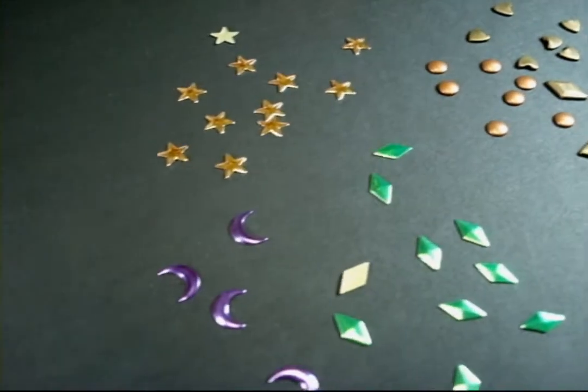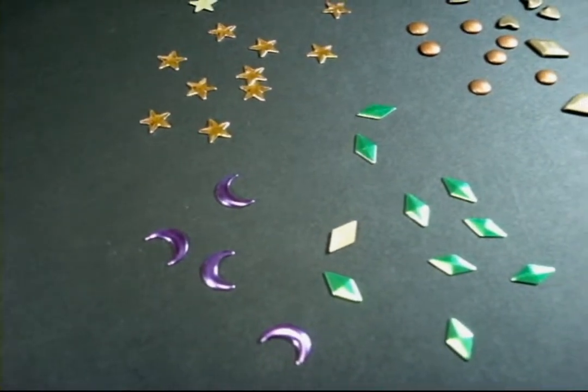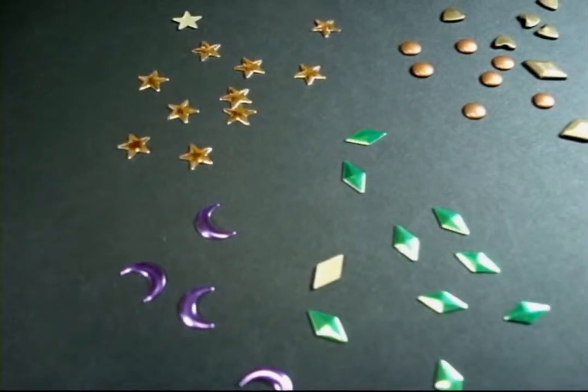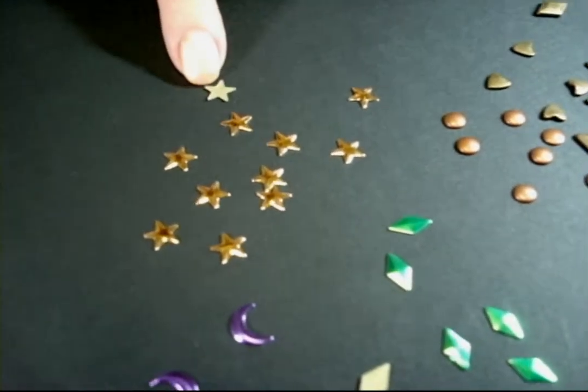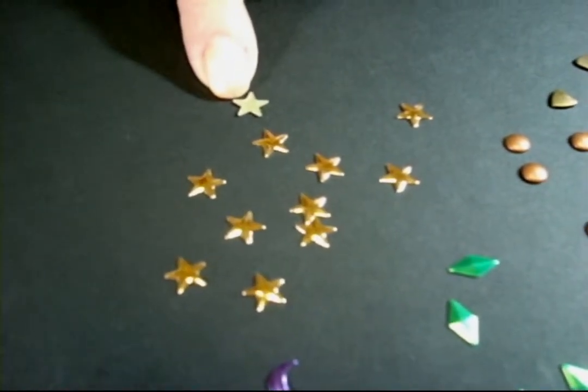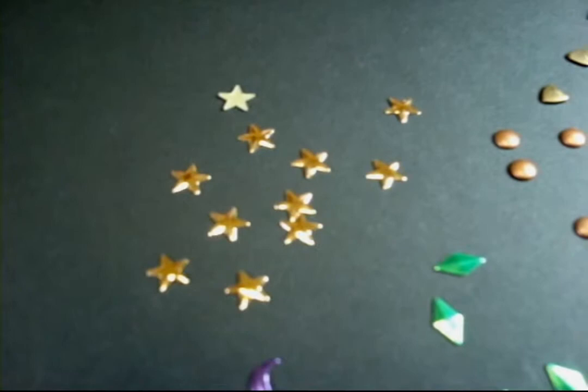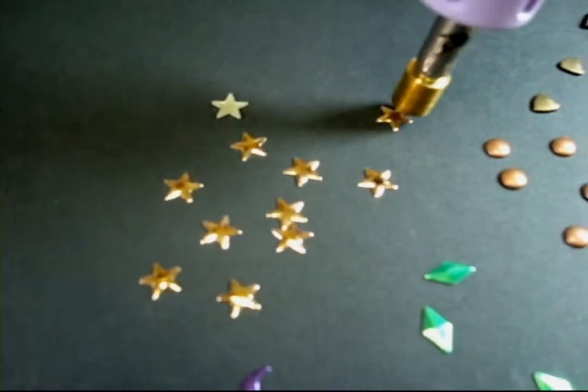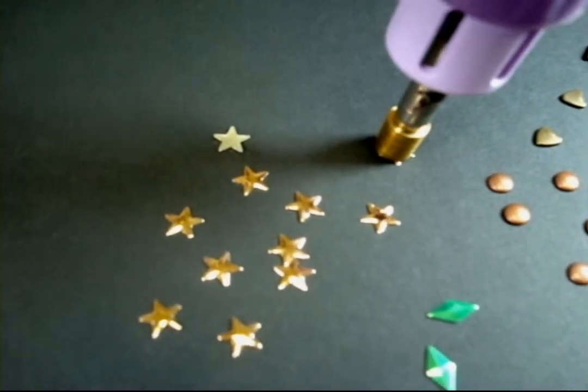Nail heads are flat. They come in 43 shapes and sizes in 16 different colors. Again, on the back of this star, you can see the glue, and you are going to use the flat tip to apply the nail head.